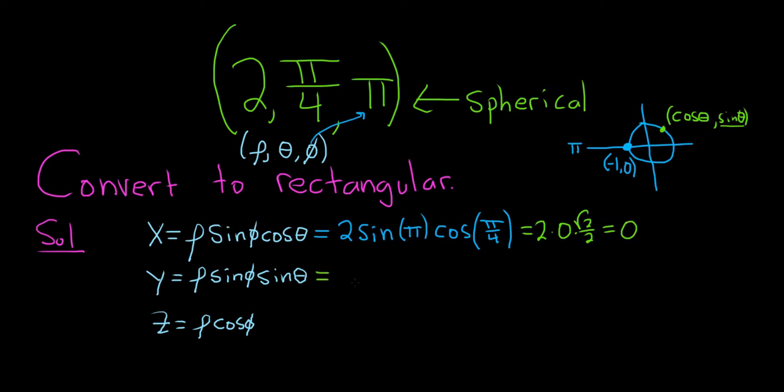y is equal to ρ, so 2. Sine of φ, again, φ is π, really easy to mess up. And then sine of θ, so θ here is π over 4. And again, the sine of π is 0, so this whole thing is going to be 0. Again, it works out really nice.